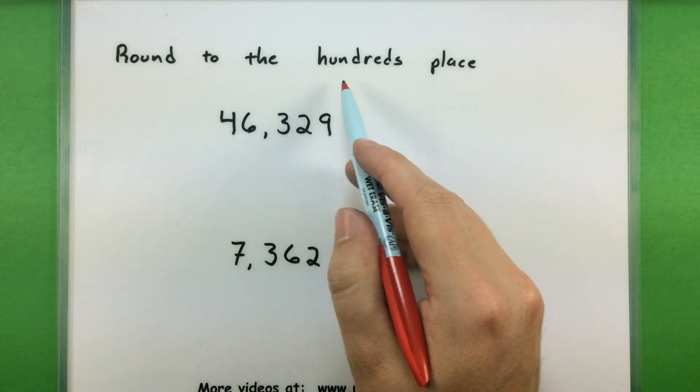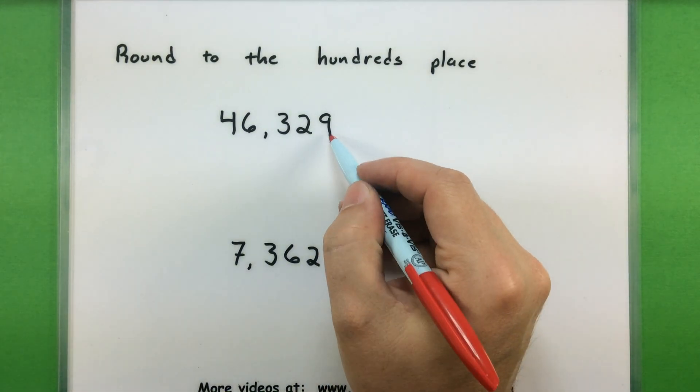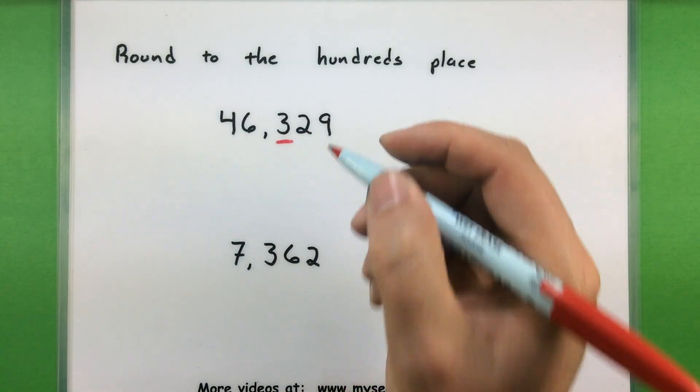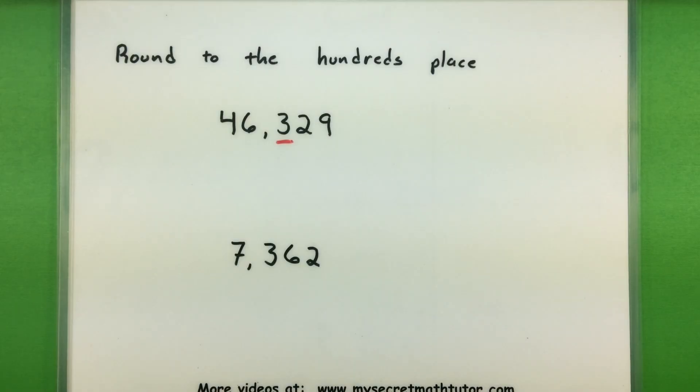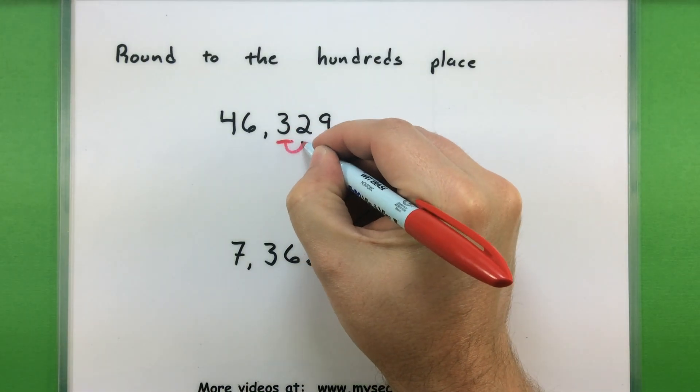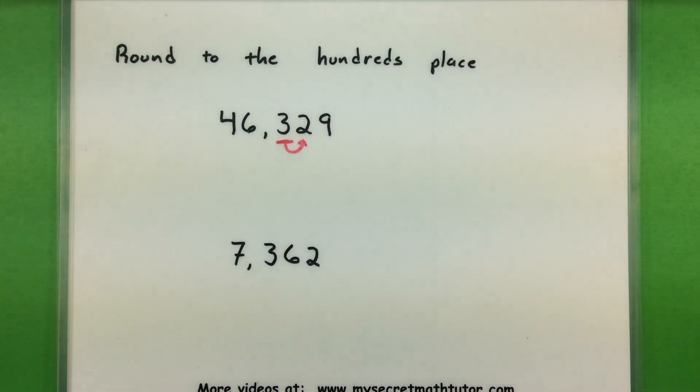To start off, I'm going to look for the hundreds place in my number. So I have ones, tens, and hundreds. That's the place I want to round to. Once we've identified it, we need to check the number immediately to the right to see how big that is.